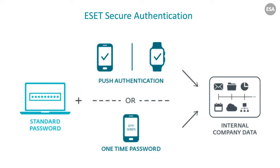Essentially the way it works is: once it's installed, the end user enters their standard password, then there's a push notification or one-time password they can access through a mobile app on their phone — iOS or Android. Once they either accept the push notification or enter the one-time password, they get access to all the company's internal data.